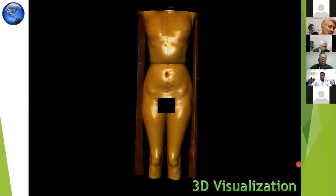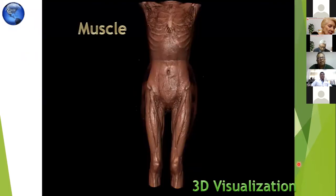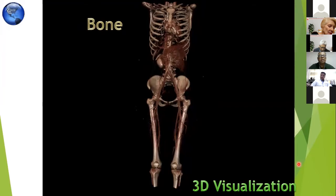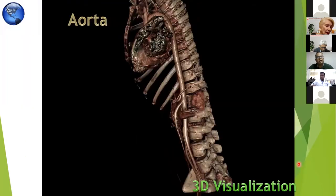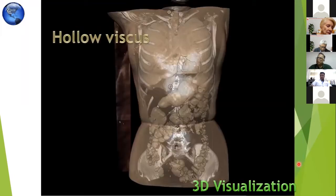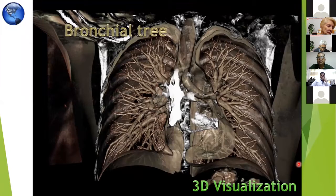We can see the skin and examine it thoroughly. After that, we click the control panel and it is removed. The muscle comes up; we remove the muscle and the bones come up. We can then see the blood vessels and annotate everything. This is also a close view — we can zoom in further. This is the hollow viscus and this is how we view the bronchial tree. We can make it close and if there is any pathology, we can understand it.